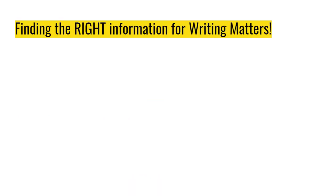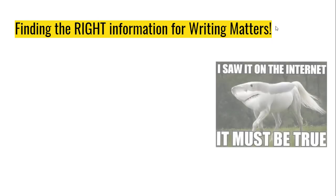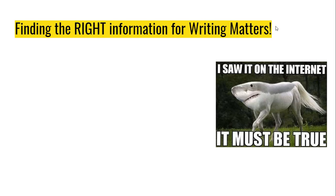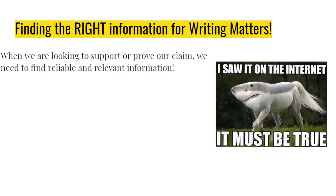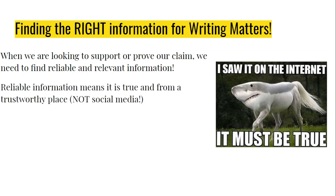Finding the right information for writing matters. Just because we see something on the internet does not mean it's actually true. There is no such thing as a shark horse, like in this picture you see here. But it's important that we look for relevant information. When we're looking to support or prove our claim in an argument, we need to find reliable and relevant information. Reliable information means it's true and from a trustworthy place, not just on social media, or not just what you saw on Instagram the other day. Anyone can Photoshop pictures or falsify information to make it sound believable.